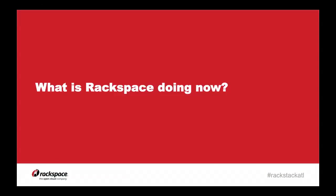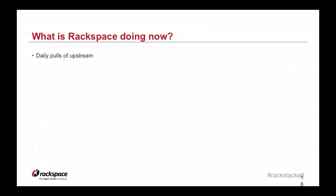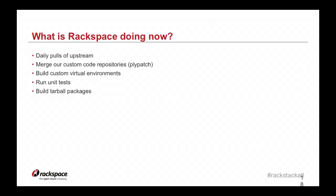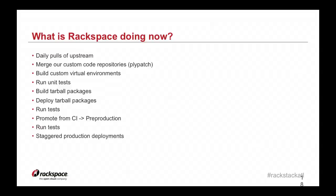So what is Rackspace doing now? We're doing daily pulls of upstream code, merging our custom code repository into the upstream code using open source software called plypatch, written in-house by Rick Harris. With that code plus our custom patches, we build a custom virtual environment, run unit tests, build a tarball package, deploy that tarball, run more tests, do a promotion process from our CI environment into pre-production, run more tests, and then have staggered production deployments over all of our production regions.